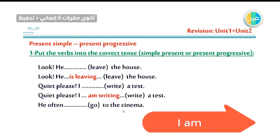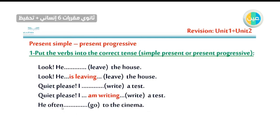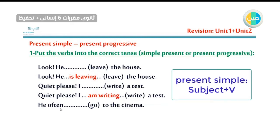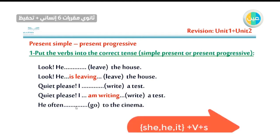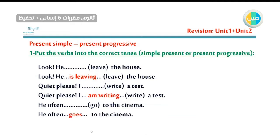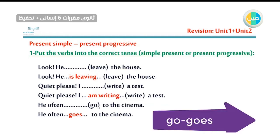Number three: 'He often go to the cinema.' The word 'often' tells us it's one of his habits or routines. So we go with present simple. The rule: subject + verb. If the subject is he, she, it, or any singular pronoun, we add -S to the verb. Go → goes. He often goes to the cinema. Notice we add -ES because the verb ends with O.